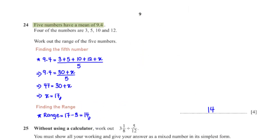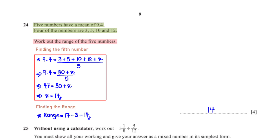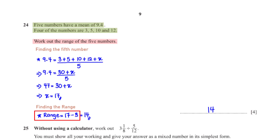Five numbers have a mean of 9.4. Four of the numbers are 3, 5, 10, and 12. Work out the range of the five numbers. First, we find the fifth number x. The mean of 9.4 equals (3 plus 5 plus 10 plus 12 plus x) divided by 5. 3 plus 5 plus 10 plus 12 is 30. Multiplying both sides by 5, we get 47 equals 30 plus x. Subtracting 30, we get x equals 17. The range equals the biggest number, 17, minus the smallest, 3. 17 minus 3 gives us 14.